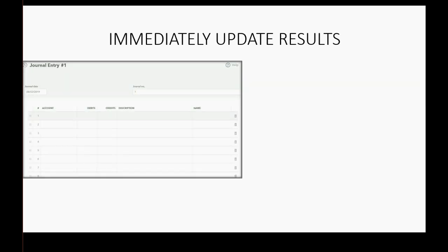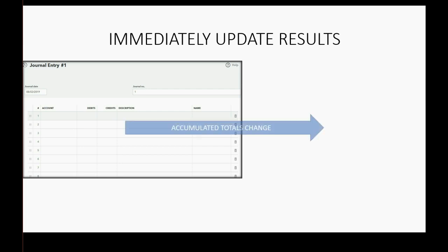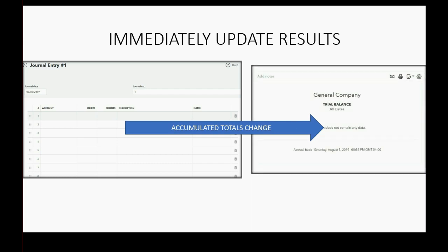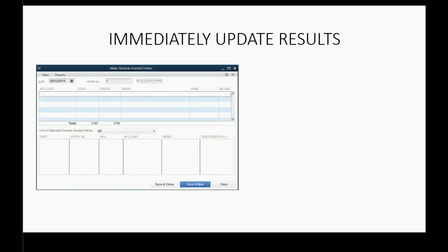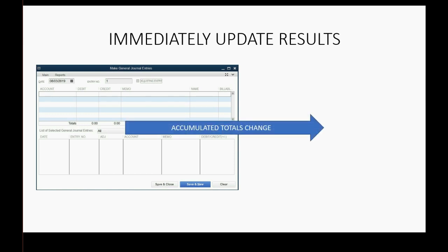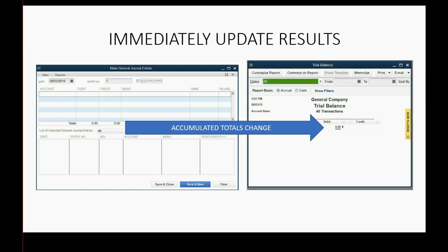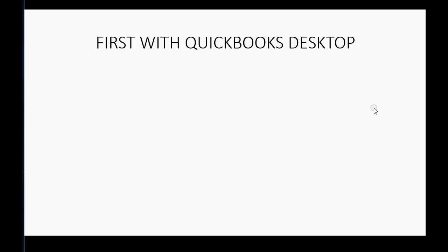If you are using QuickBooks Online, this is the window that you would enter the transaction in, and the accounts would change immediately in your QuickBooks Online trial balance. I'm going to demonstrate this in QuickBooks Online. If you're using QuickBooks Desktop, this would be the window that you would record the debits and credits of a journal entry. In QuickBooks Desktop, the results in the trial balance would be updated immediately. First, we will do these transactions with QuickBooks Desktop, and we will do the same transactions as before.